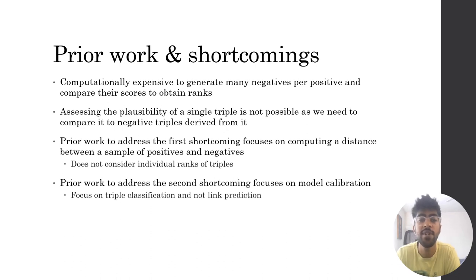There are two main shortcomings with traditional link prediction evaluation. First, it is computationally expensive to generate many negative triples per positive and compare their scores to obtain their ranks. Second, assessing the plausibility of a single triple is not possible as we need to compare it to several other negative triples derived from it. Prior work to address the first shortcoming focuses on computing a distance between a sample of positives and negatives, but this does not consider the individual ranks of triples. Prior work to address the second shortcoming focuses on model calibration, but this focuses on a different task called triplet classification, and not link prediction.